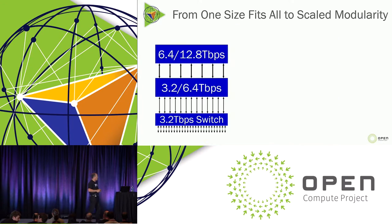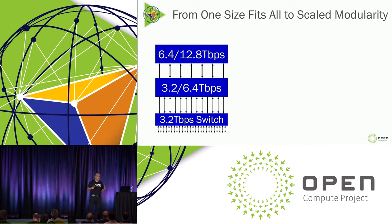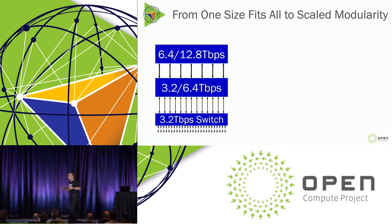Bringing ourselves back from old history to the recent present — this is the way most of us think of networking deployment. There is a top-of-rack switch at 3.2 Tera, there is a spine at 3.2 and 6.4, and the upper layer — everyone is chasing the top of the hill with 12.8 Terabit per second. However, this is a one-size-fits-all concept for application and use case. And there are many complexities in building these types of ginormous products.